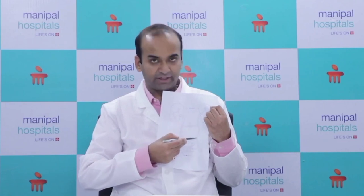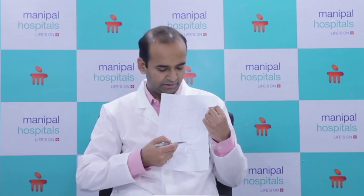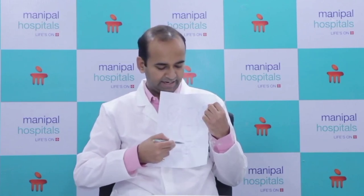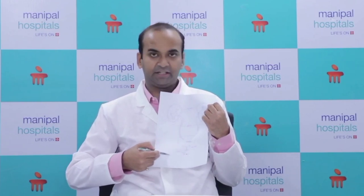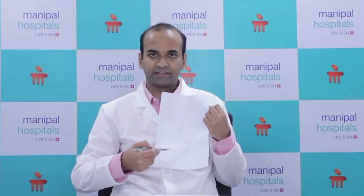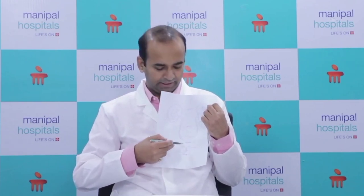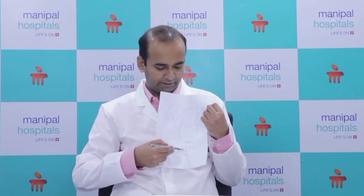As we can see in this diagram, these are your kidneys. This is the tube — the ureter — which leads to the bladder. After the bladder, there is the urethra, which carries urine out. Just below the bladder is the prostate in men.